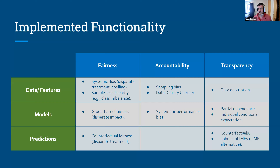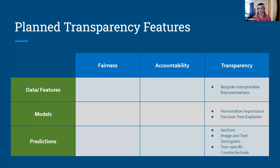Here is some functionality we've already implemented: systematic bias detection, sample size disparity, label imbalance, group fairness, counterfactuals showing what you can change to alter a decision, and a number of other things. In the bottom right you'll see Tabula Blimey, the LIME alternative that Casper presented. We also have transparency features that are planned — image and text surrogates, tree-specific counterfactuals, a decision tree explainer, and implementing Anchors using the package.